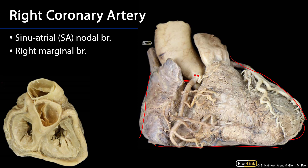In the remainder of instances, it is typically a branch of the LCA. The RCA then continues down through the coronary sulcus, giving off a couple of branches along the way. Toward the inferior border it gives off the right marginal branch, which rides the inferior border of the heart toward the apex, supplying the wall of the right ventricle with blood.